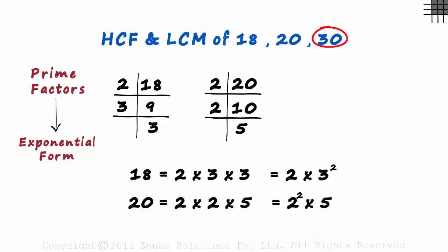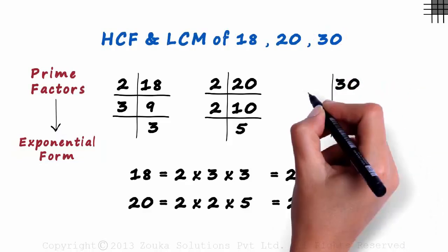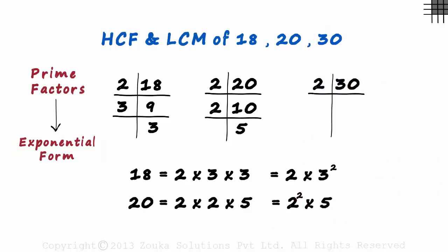And the last number is 30. It is divisible by 2, and 2 times 15 is 30. 3 times 5 is 15. So we can write 30 as 2 times 3 times 5. And in exponential form as well, it is written in the same way.